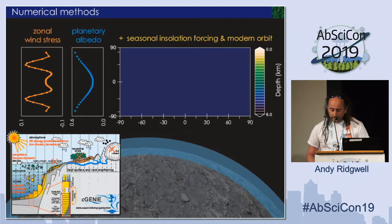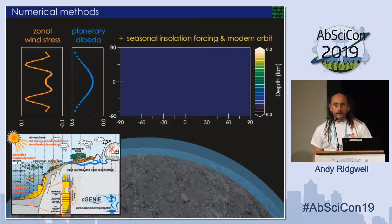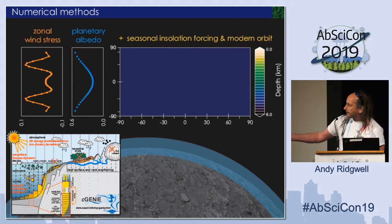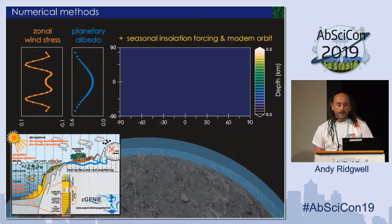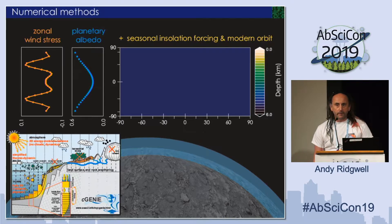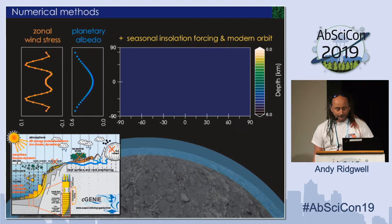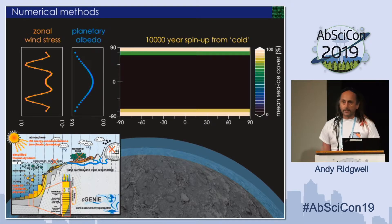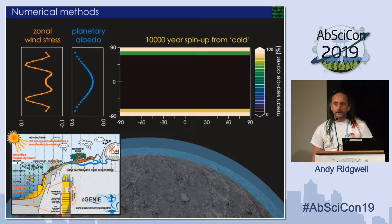This model also differs from the one in the previous talk in that it's very simply forced at the surface. I do not have a dynamical atmosphere, which saves a lot of computational time. It's having a zonal wind stress profile applied to drive ocean circulation, and a very simple zonal average planetary albedo in the absence of a dynamical atmosphere and clouds. I'm running the model for 10,000 years, spinning up from cold — meaning the ocean starts at zero degrees.